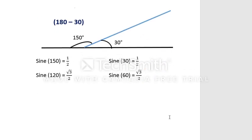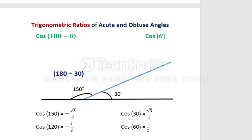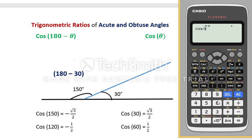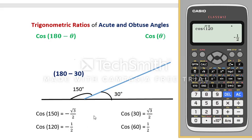Let's compare the ratios of cosine for acute and obtuse angles. Cos 30 is √3/2. Cos 150 is √3/2 but with a negative sign. Cos 60 gives 1/2, and cos 120 is −1/2. So in sine, the acute and obtuse angle have the same ratio with the same sign, but in cosine the acute and obtuse angles have the same numerical ratio with a negative sign for the obtuse angle.